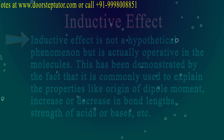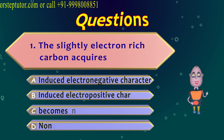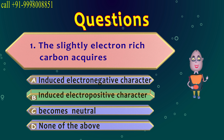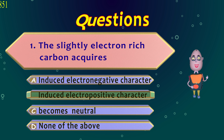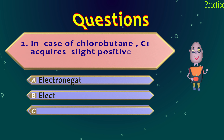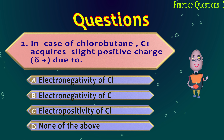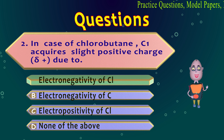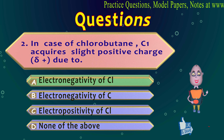Now let's discuss objective questions. First question: a slightly electron-rich carbon acquires induced electronegative character — this is the wrong answer; an electron-rich carbon acquires induced electro-positive character. Second question: in chlorobutane, C1 acquires a slightly positive charge (delta plus) due to the electronegativity of chlorine, or equivalently, the electropositivity of carbon. The correct answer is option A. These are the topics covered in today's video — thank you.